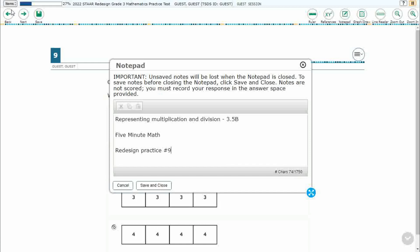Hello and welcome to 5-Minute Math. Today we are looking at the third grade concept of representing multiplication and division. This is standard 3.5b in the great state of Texas and we are using item number 9 of the Redesign Practice Online Star Test.